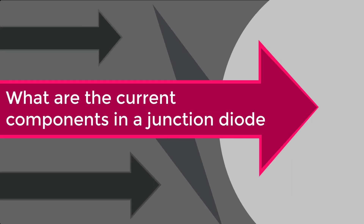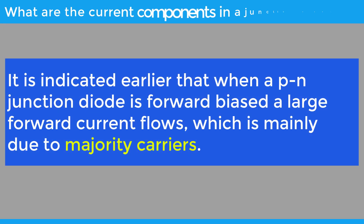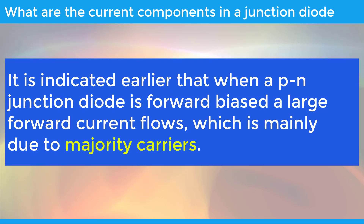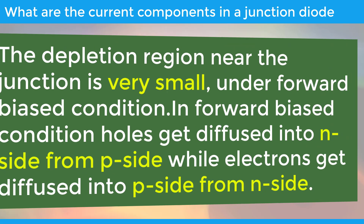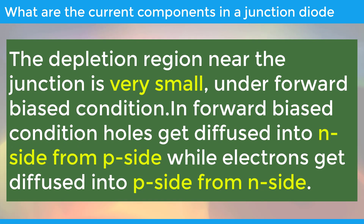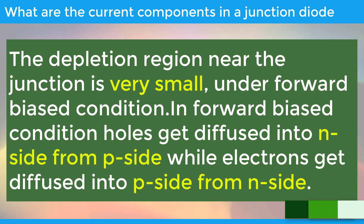What are the current components in a junction diode? When a PN junction diode is forward biased, a large forward current flows, which is mainly due to the majority carriers. The depletion region near the junction is very small in forward biased conditions. Holes get diffused into the N side from the P side, while electrons get diffused into the P side from the N side.